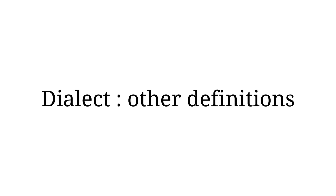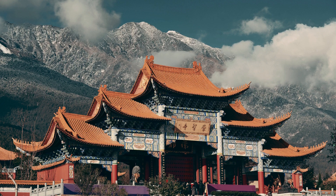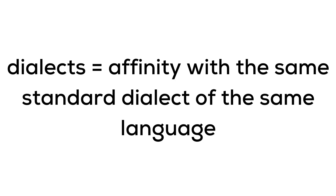There are many definitions of the word dialect, some of them political. For example, in China, all other Chinese languages are considered dialects of the official language, Mandarin, even when those languages have very little similarity with Mandarin. Another understanding of dialects is that even if they are not 70% mutually intelligible, two systems can be considered dialects of the same language.